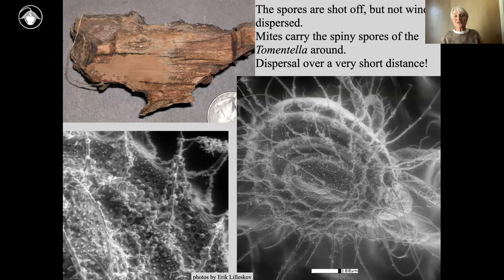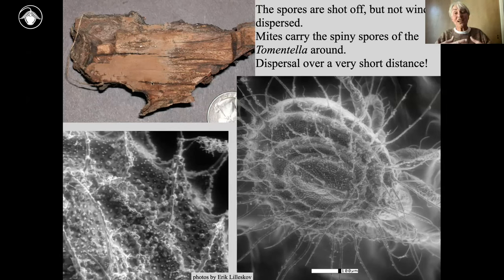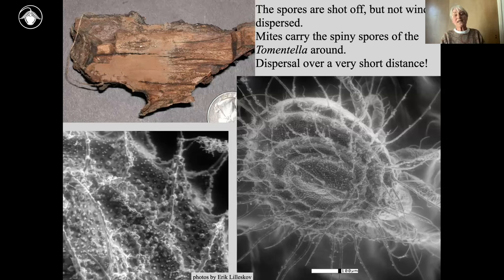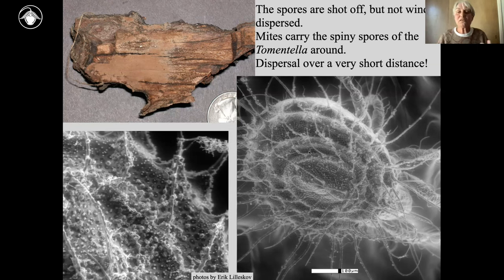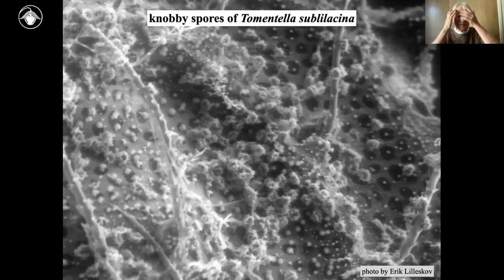Going back to species that do shoot spores off — it doesn't always mean the spores are then distributed by wind. Here we have a crust on the underside of a piece of wood lying on the forest floor. Wind dispersal? Forget it. Instead, mites will disperse it. Mites walk like lawn mowers through this little crust, get covered with spores, eat the spores, and disperse them. Remarkably, these spores remain viable even if the mite is eaten by a rove beetle, or the beetle is eaten by a salamander — a certain percentage can still germinate. Here we can see all the spiny spores of this Tomentella species coating the outside of the mite.